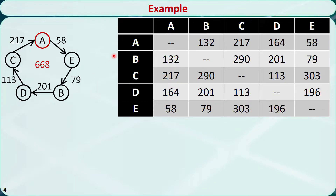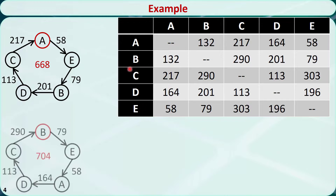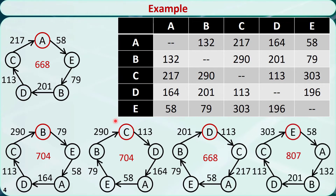After applying this procedure, we need to repeat it by beginning at a different city: B, C, D, and E. These are the tours found respectively. So we will take the best tour found so far — either this one or this one. It turns out they are actually the optimal solutions for this example. We are lucky for this example, but still I should mention that there is no guarantee for other examples.